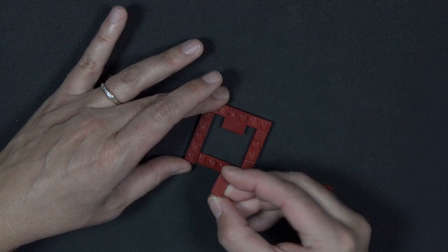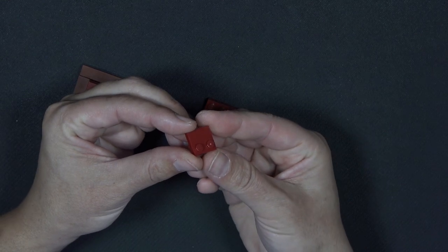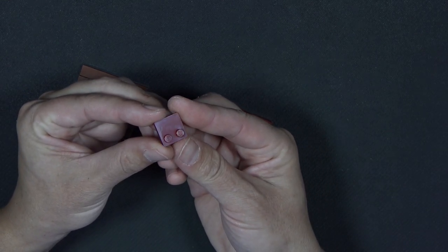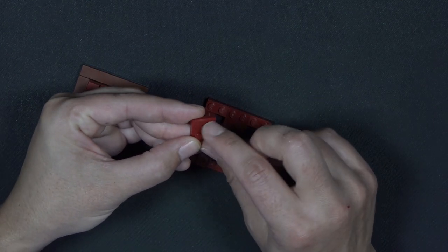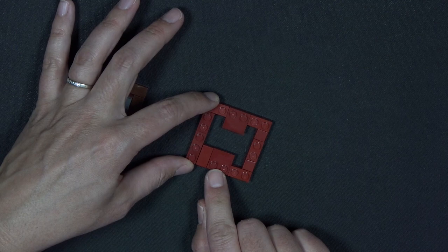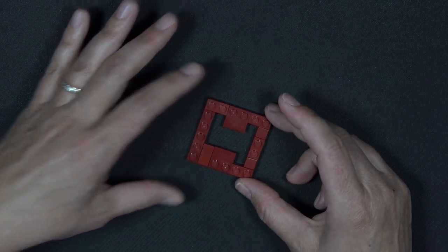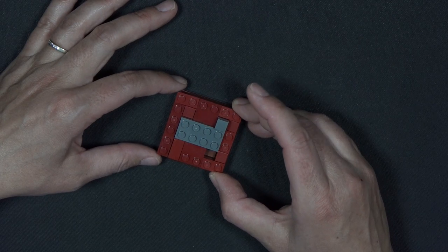This is a 1x2 tile that will sit on that side. And then I have a second one of these 2x2 modified tiles, again with the tile portion sitting on the inside of the box, and the studs sitting on the outside of the box. And all of this is going to sit right on here, like that.